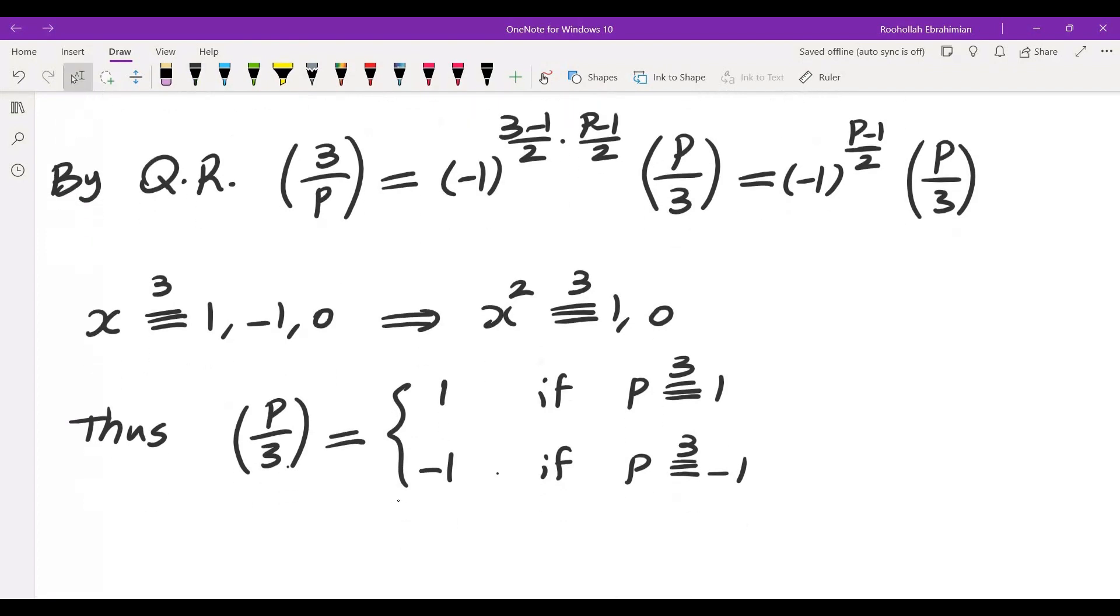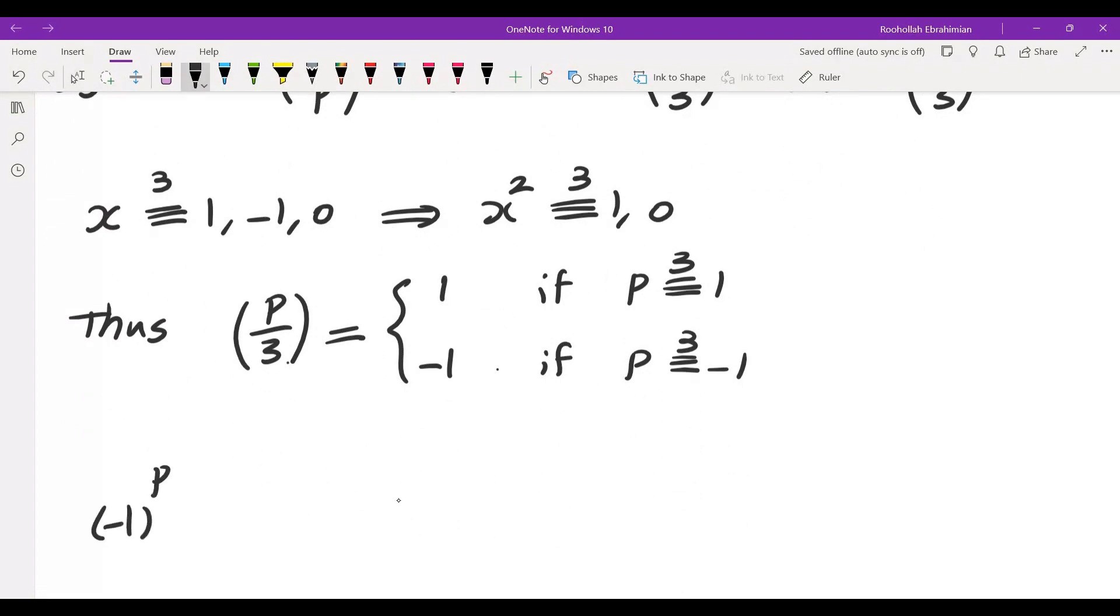Now, let's determine negative 1 to the power of P minus 1 over 2. Negative 1 to the power of P minus 1 over 2 is going to be 1 if P is 1 mod 4. Negative 1 if P is negative 1 mod 4.